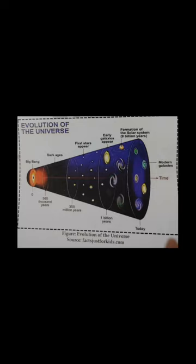Evolution of the Universe. The figure shows the timeline: Big Bang, Dark Ages 380,000 years, First stars appear 300 million years, Early Galaxies appear 1 billion years, Formation of the Solar System 9 billion years, Modern Galaxies, Time Today.